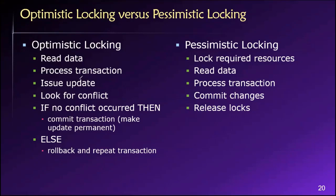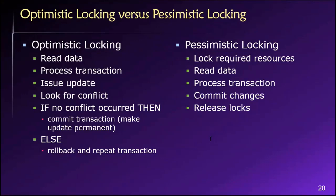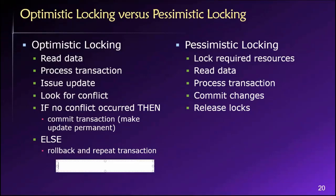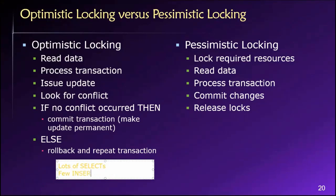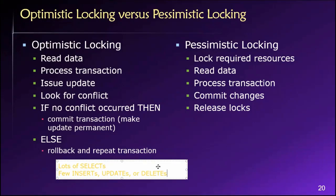Our assumption about whether conflicts are likely is critical to our choice of optimistic versus pessimistic locking. As friendly advice: if a database primarily uses reads — lots of selects, just reading data from the database — with only a few changes like inserts, updates, or deletes, then optimistic locking would be a good strategy.